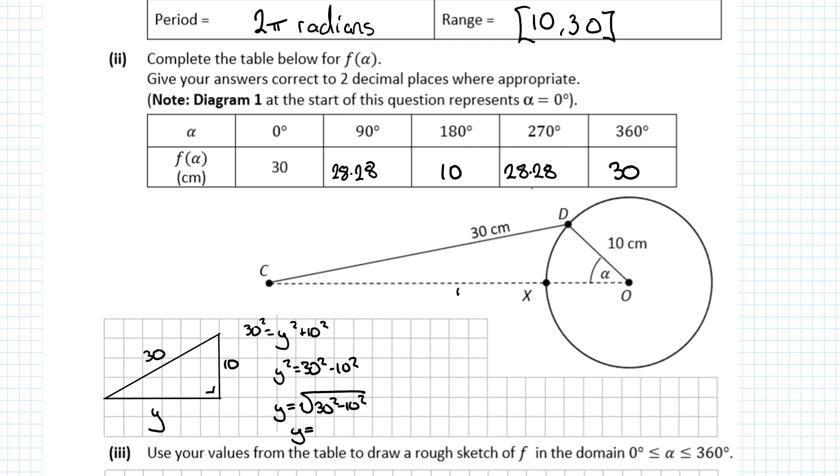Most people will get 28.28 when they should really get 18.28. The actual answer is 10 less because you need to subtract the length of the radius. For 180°, imagine D all the way around here. It's 30 minus the diameter of 20, giving 10. The same scenario happens at 270° - the triangle is just downwards, but it's the same calculation.